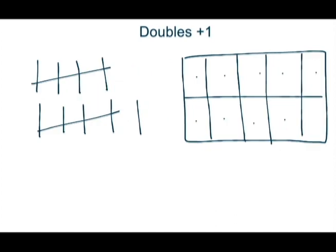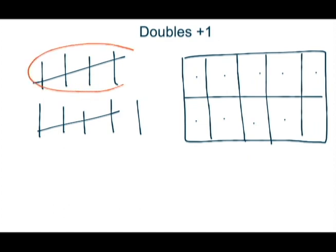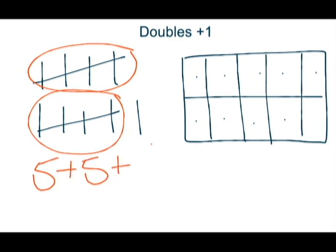In doubles plus one students are still using the property of doubles that they learned and they're adding one more. So here students are adding five plus five plus one more. So they already know that five plus five is ten. They're adding one more for eleven. So students would count five, ten, eleven.